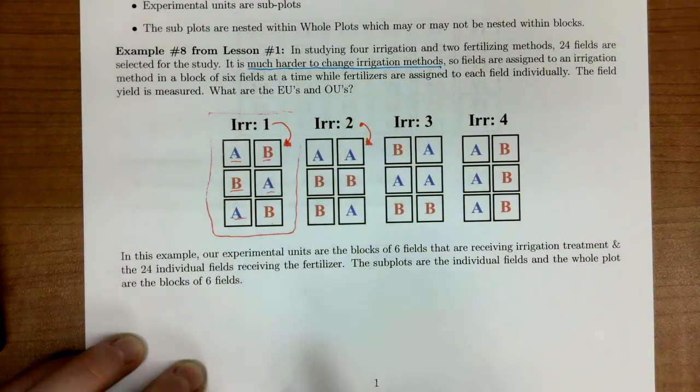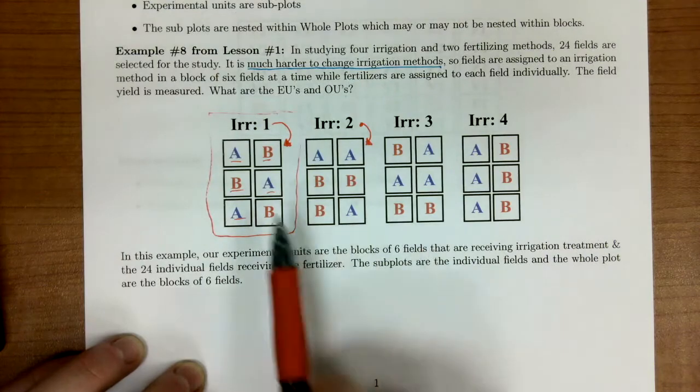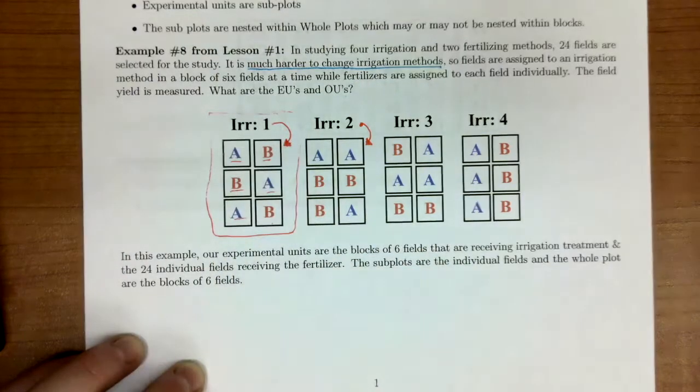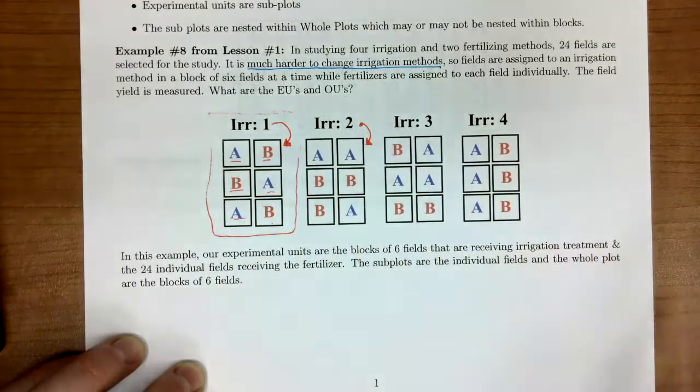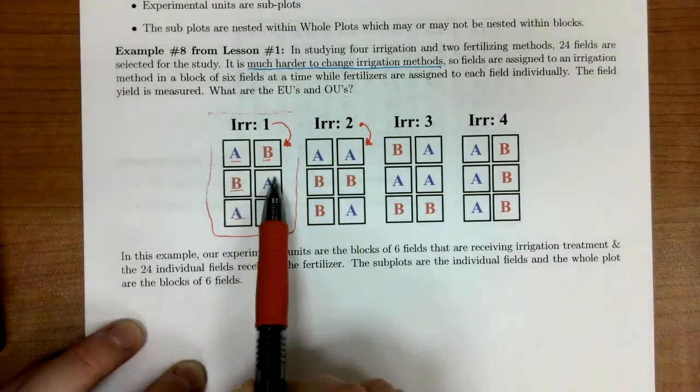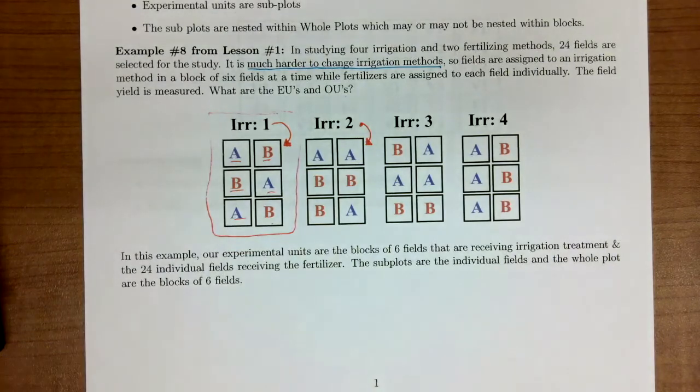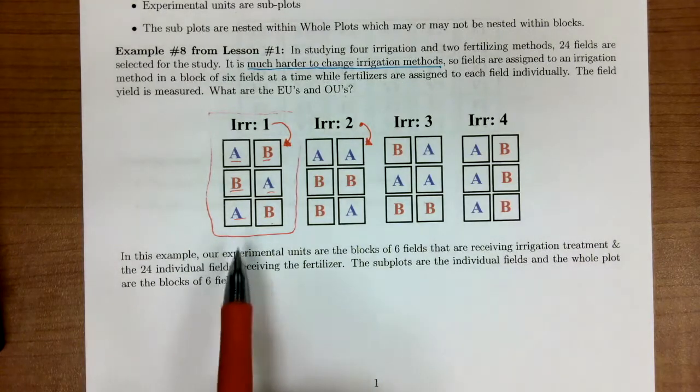In this case, our experimental units are the blocks of six fields that are receiving the irrigation treatment. And our other experimental unit are the 24 individual fields that are receiving the fertilizer. So the subplots are the individual field and the whole plots are a specific block.